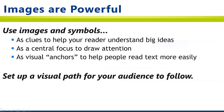First, let's focus on images. Images can be used in several different ways to control how people are experiencing the information on your poster. You can use images and symbols as clues to help your reader understand big ideas more easily. You can use them as a central focus to draw people's attention, either from far away or to lead them through an information path. And you can use them as visual anchors to help people read text more easily. If each chunk of text has an image or a symbol associated with it, it'll be really easy for people to navigate the different ideas on your poster.